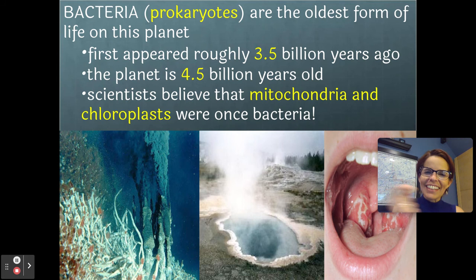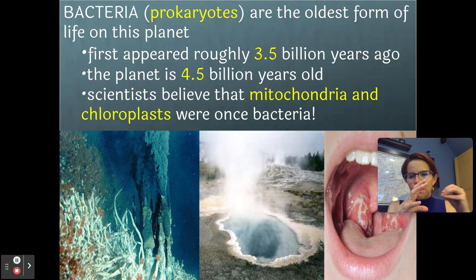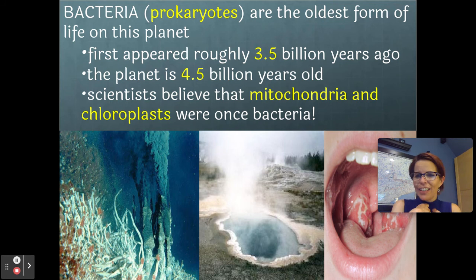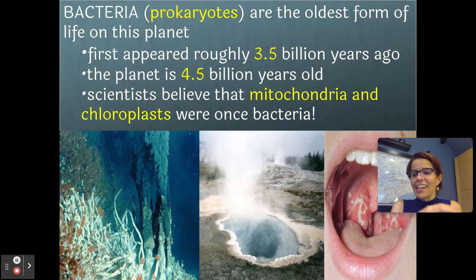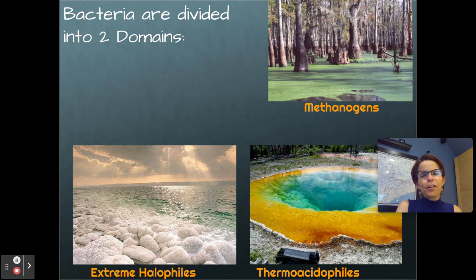One interesting thing is that scientists actually believe that mitochondria and chloroplasts started out as bacteria that were self-sufficient, and then they ended up moving into larger cells and permanently living there. So we have mitochondria that make all of our energy, our ATP, and we think those were actually self-sufficient bacteria at one time that are now part of our bodies. Chloroplasts are what make plants green — they photosynthesize and make our oxygen and glucose — and they think those were also bacteria that moved into cells and became part of the cells permanently.